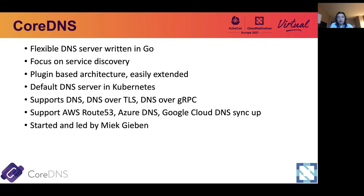As many of you know, CoreDNS is a flexible DNS server written in Go. It was developed and started in 2016. At the beginning, it was really a fork of Caddy HTTP server. Over the years, the relationship between CoreDNS and Caddy has been gradually decoupled, although even as of now, you can still find some traces of Caddy reference in CoreDNS codebase.